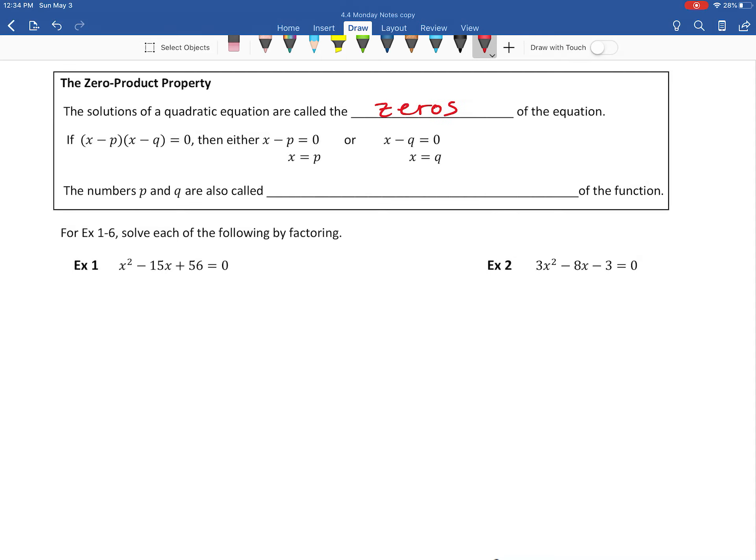Now, the solutions of a quadratic equation are called the zeros of an equation. And so pretty much where you see this x minus p times x minus q, that's pretty much just factoring what we've been doing in the past. But what's a little bit new is we're setting it equal to zero. The zero product property says that you can split each one of these equal to zero and then solve for each one individually. And when you do that, the numbers p and q are called the roots of the function.